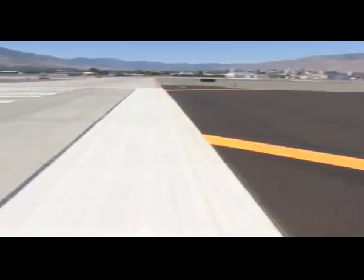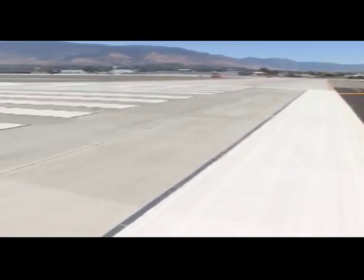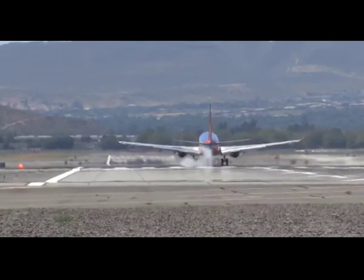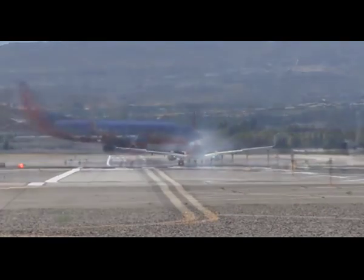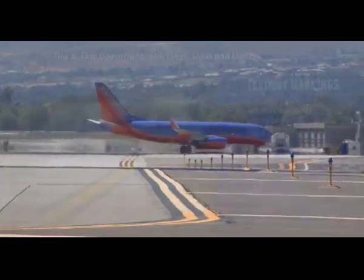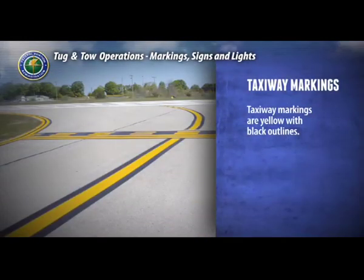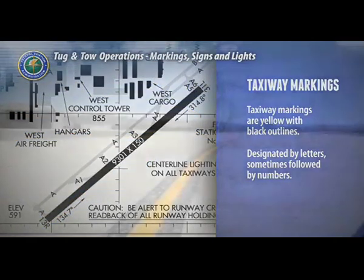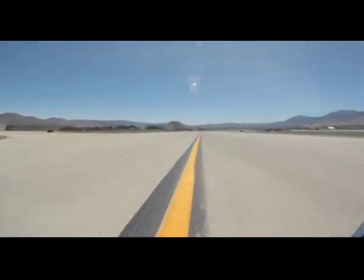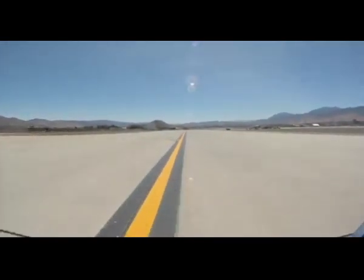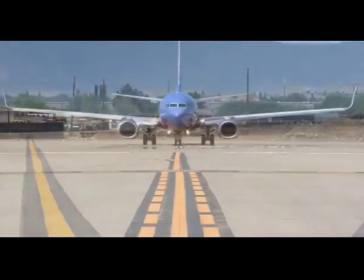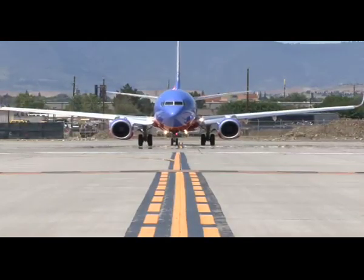With the exception of runway designation markings, most likely you will not encounter the majority of these markings, as they are intended to help pilots land their aircraft. All taxiway markings will be yellow and may be outlined in black to increase visibility. Taxiways are designated by letters, followed by numbers in some instances. The center line—the line of alignment you use to keep the aircraft in the center of the taxiway—has a solid yellow stripe. The nose gear should travel along the center of this line.